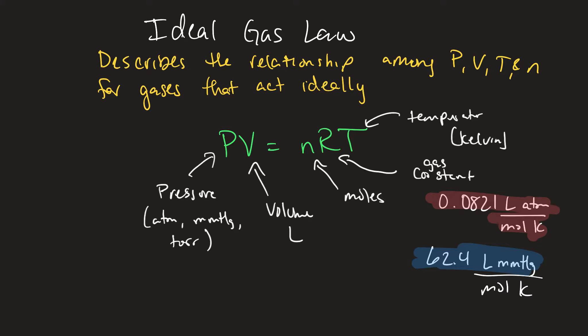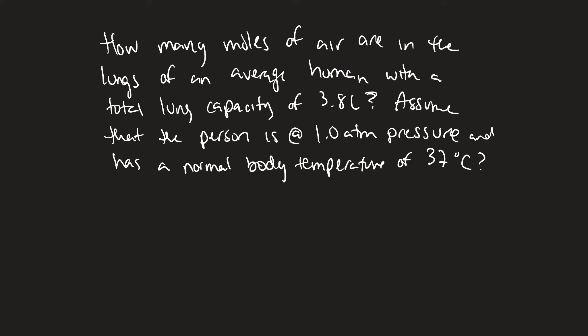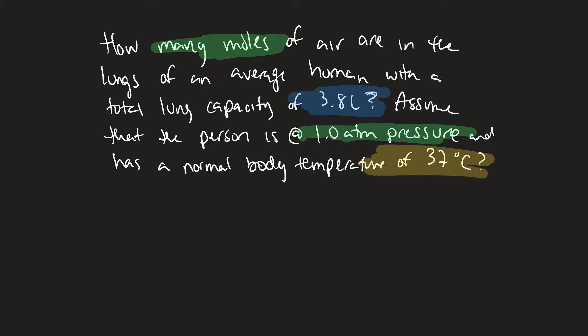Let's jump into an example. How many moles of air are in the lungs of an average human with a total lung capacity of 3.8 liters? Assume the person is at 1 atm pressure and has a normal body temperature of 37 degrees Celsius. So we're looking for moles — that's N. We know the volume is 3.8 liters, pressure is 1 atm, and temperature is 37 degrees Celsius.